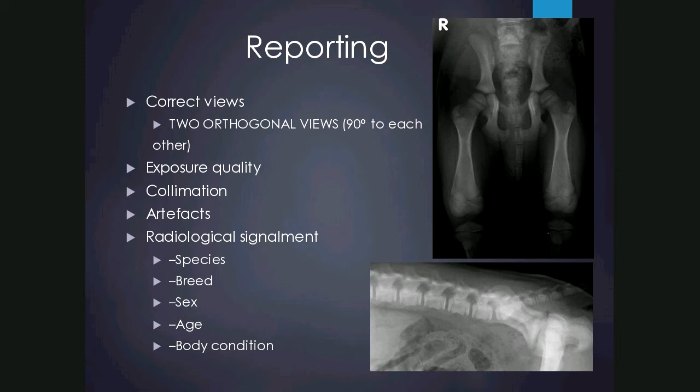For species, we can determine from the radiograph if we're looking at a horse, a cat, a bird, or a dog. Breed is not usually something we can determine in horses or cats, but in dogs we can determine whether it is chondrodystrophic — for example a dachshund — or brachycephalic like an English bulldog, by looking at the spine and the skull. For sex, the presence of the os penis or testicles tells us the patient is male.